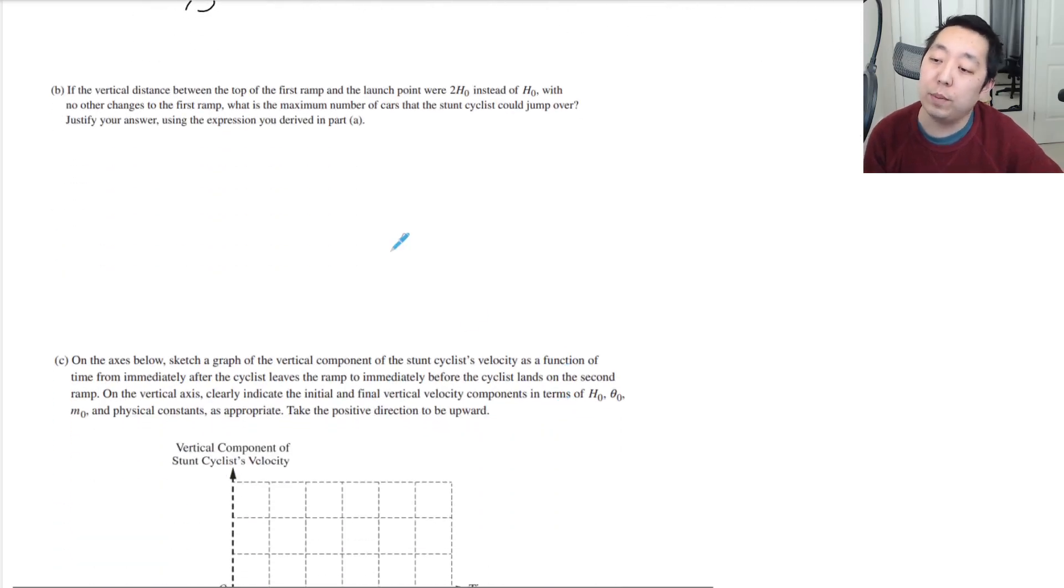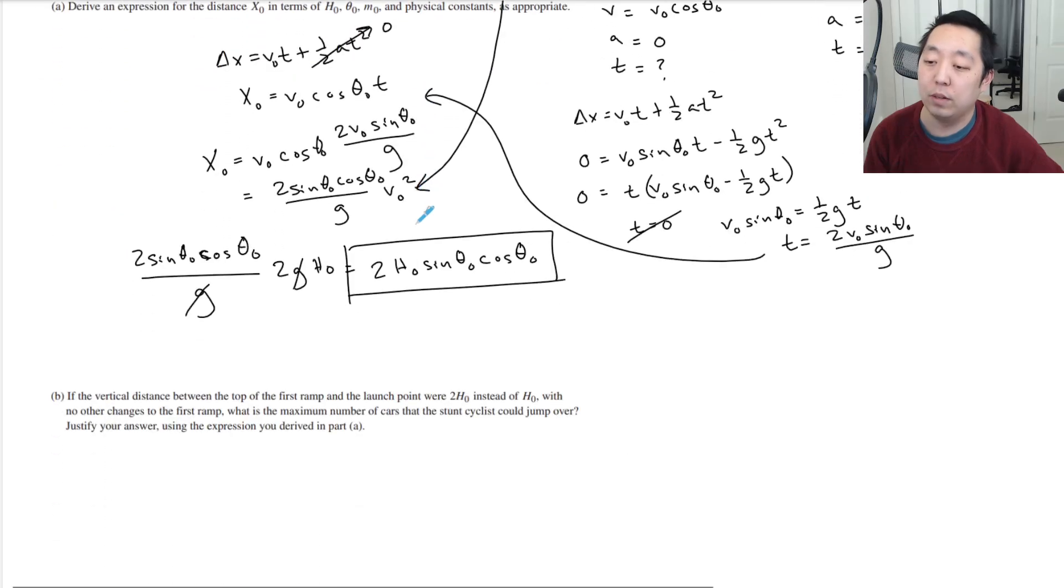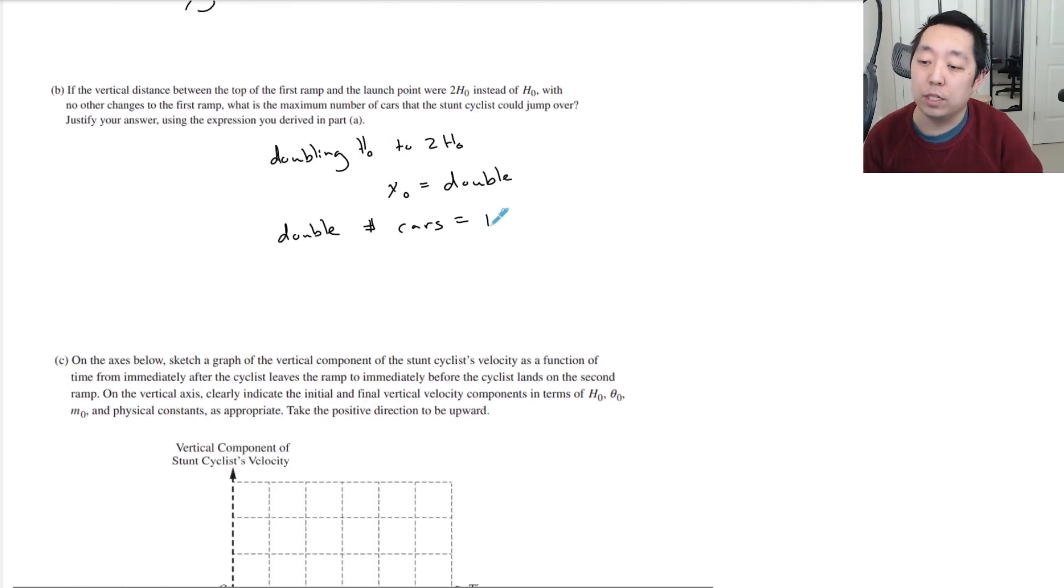If the vertical distance between the top of the ramp and the launch point were 2 H 0 instead of H 0 with no other changes to the first ramp, what is the maximum number of cars that the stunt cyclist could jump over? Justify your answer using the expression. So he jumps over 6, which is X 0. If we doubled, doubling H 0 to 2 H 0 means that your X 0 will double also. Because it's a linear term. If I make that, it's going to be 4 of this. So it's going to be double the number of cars. And how many cars did he do? He did 6 cars. So we would say 12 cars.